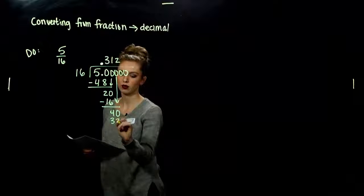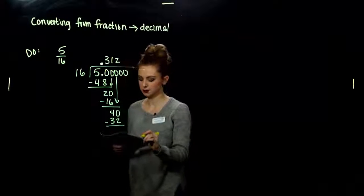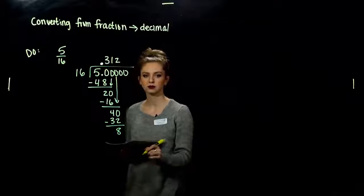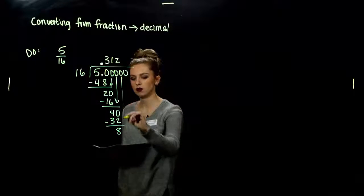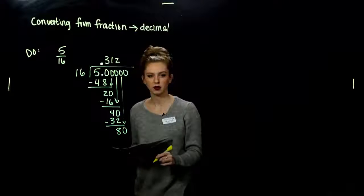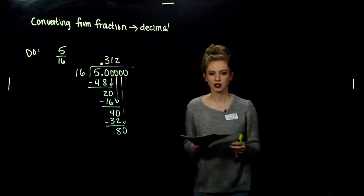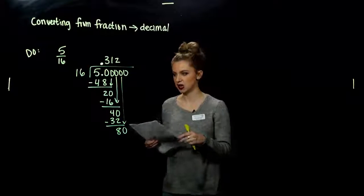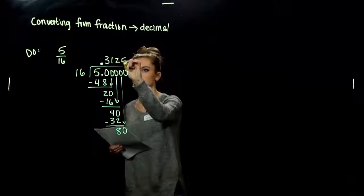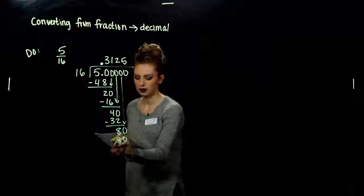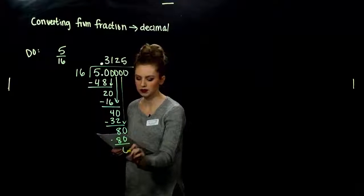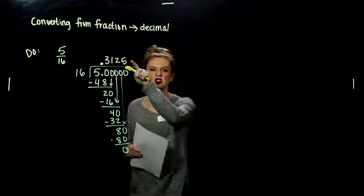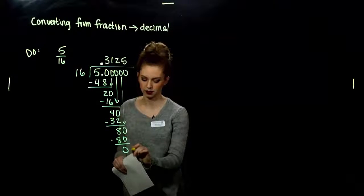So I'm left with 4. 16 doesn't go into 4, so I need to bring down the next placeholder. 16 times what gets me close to 40 without going over? 2 — looking at 32. The difference is 8. 16 doesn't go into 8, so we bring down another placeholder. 16 times what gives me 80 exactly? 5. And a remainder of 0 says we're done — no remainder.